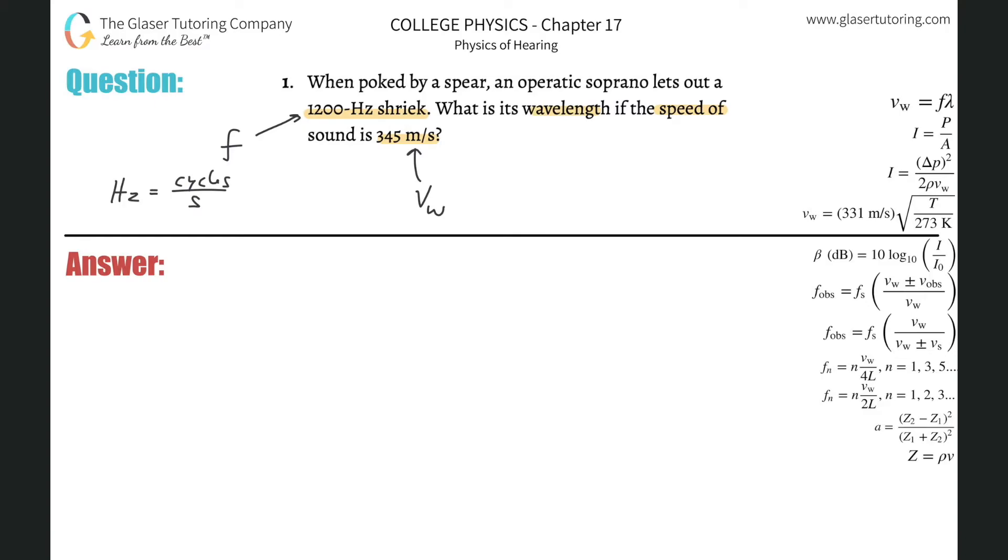So essentially they gave us speed, frequency, and we are asked to calculate wavelength, so you have to know the relationship between these three variables, and it's just going to simply be memorized. I have the formula up there on the upper right. It says that the velocity of a wave will equal the frequency of that wave multiplied by the wavelength.